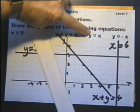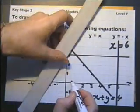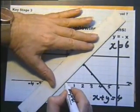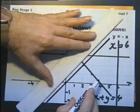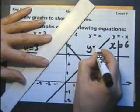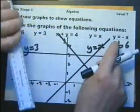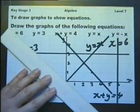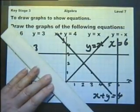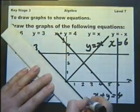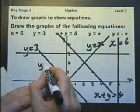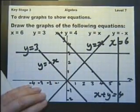x equals y or y equals x must go through the points 1, 1, 2, 2, 3, 3, 4, 4 and so on, because the y equals the x. And y equals minus x will go like that. So, these are graphs that you should know and be able to draw without a thought.